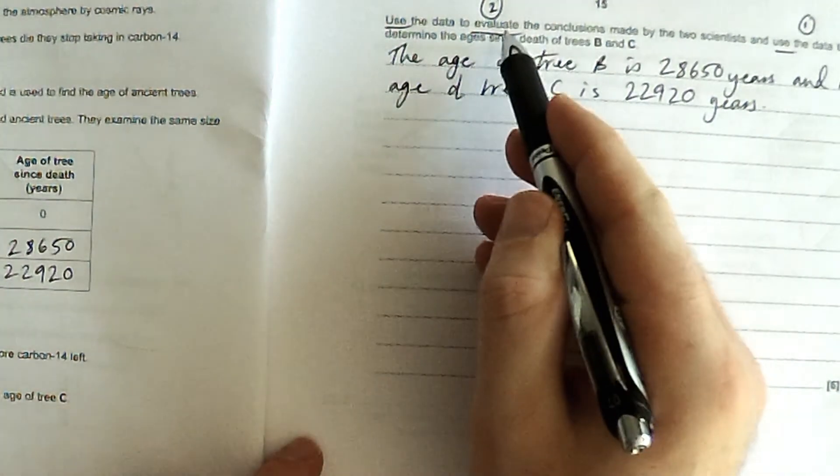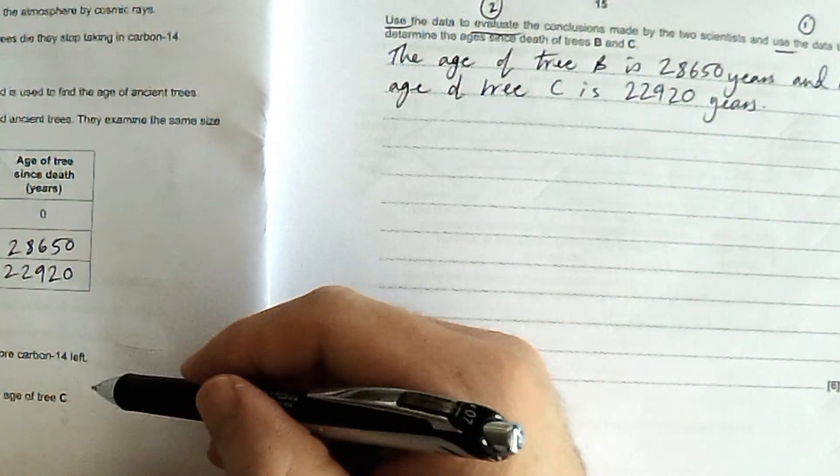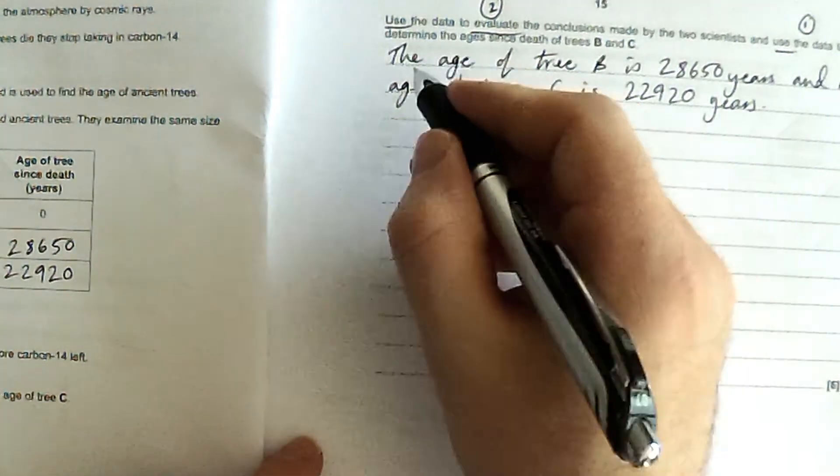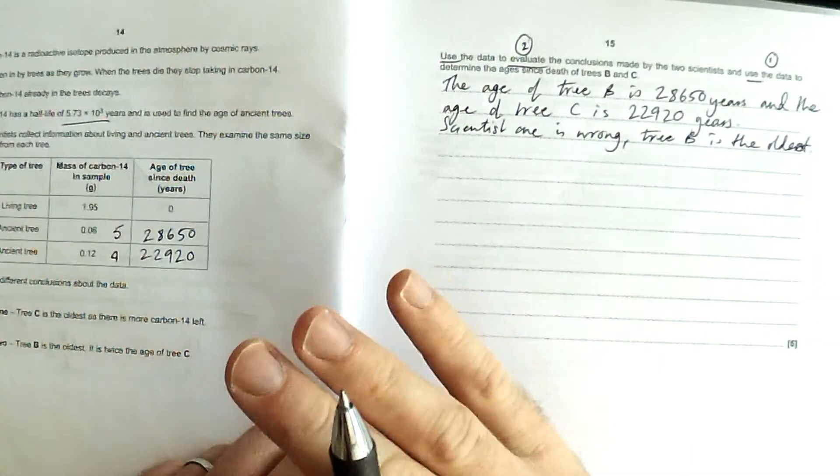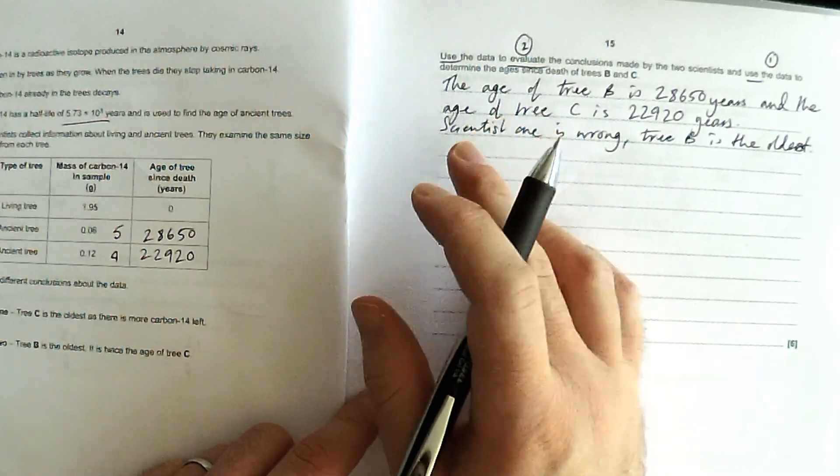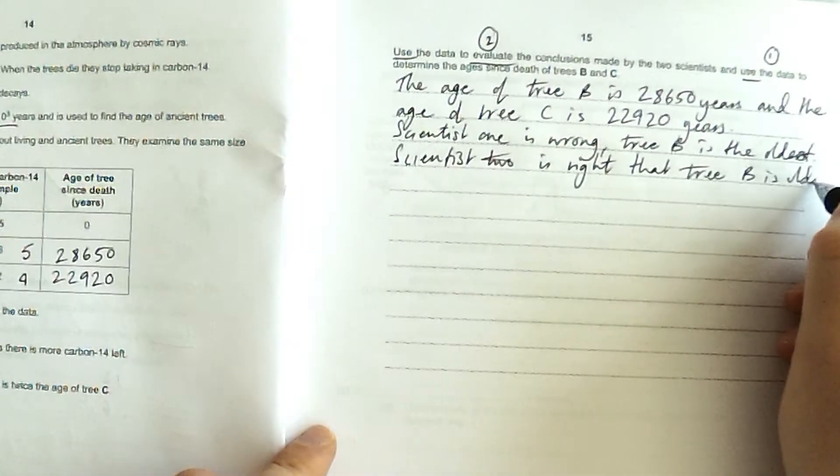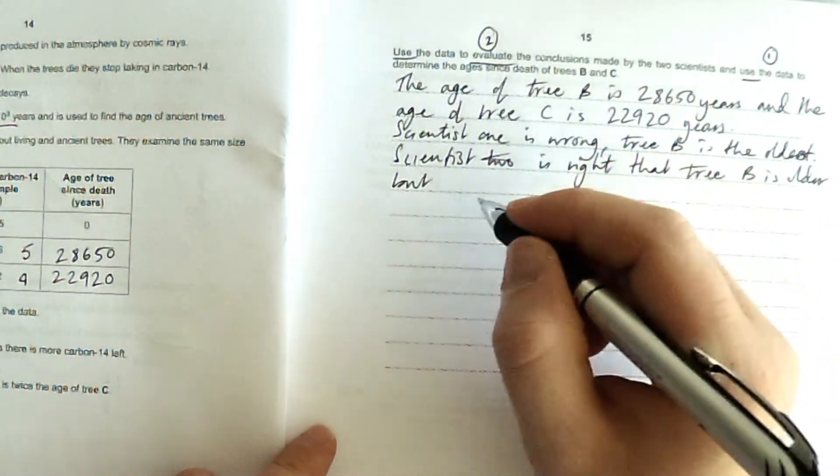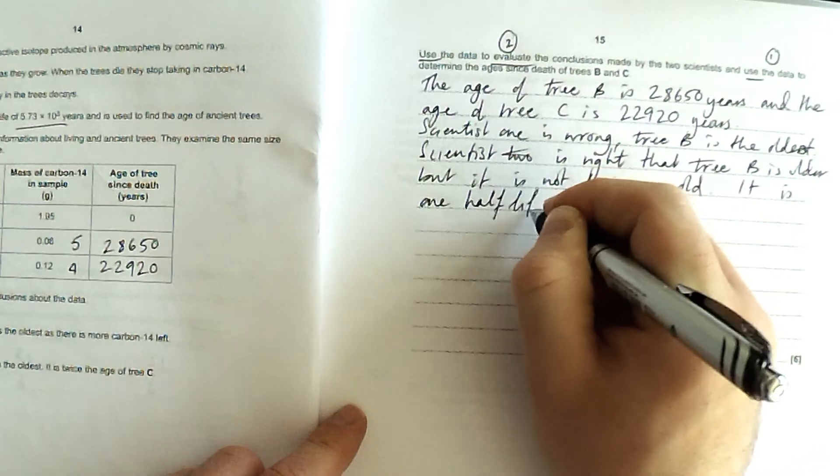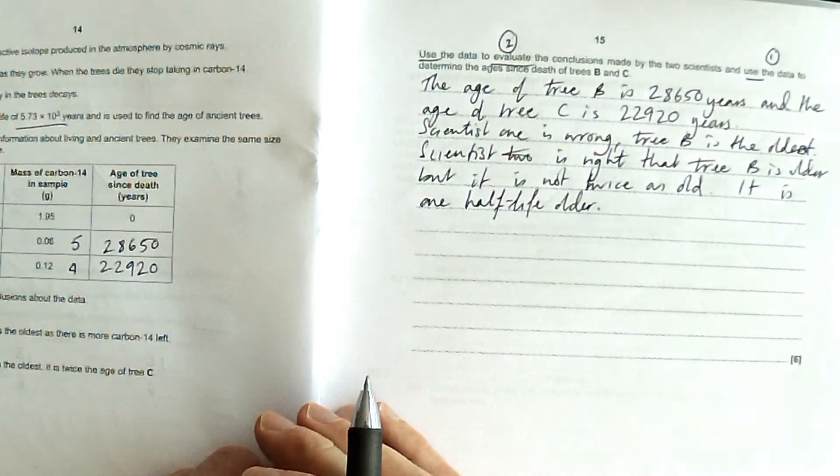So now I need to go ahead and evaluate the statements of each scientist. And I'll probably just do one and then two. So scientist one is wrong. Scientist one is wrong because tree B is the oldest. Scientist two is partly right but partly wrong. But he's partly wrong in that it's not twice as old.